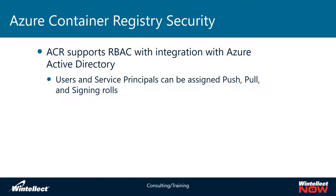Regardless of how you organize it, these three basic permissions give you the ability to control who is contributing to that particular container registry and who is pulling from it. You can separate those roles from your production environments and your actual build environments whenever you're assigning privileges to security principals or users in your DevOps chains.